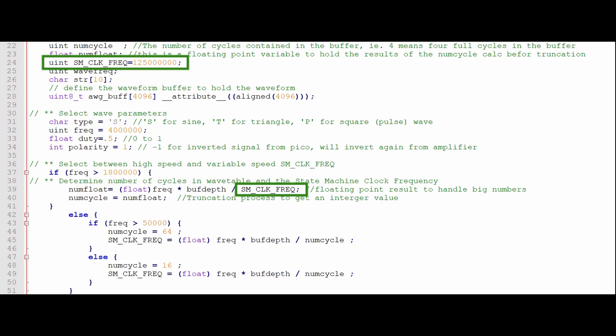and dial in the desired frequency by the appropriate selection of the number of wave cycles in the wavetable buffer. For example, the number of cycles in the 4096 long wavetable buffer is calculated by multiplying the desired frequency by the bytes in the wavetable and then by dividing the number by the state machine clock frequency.